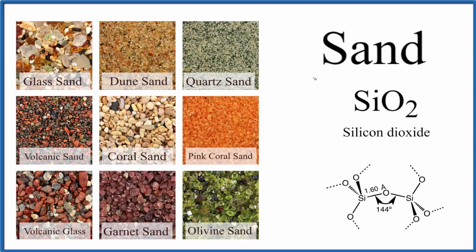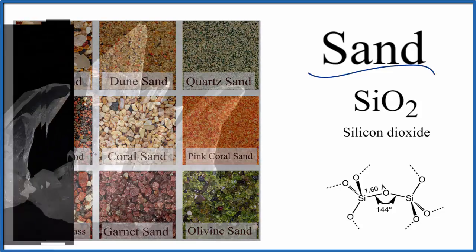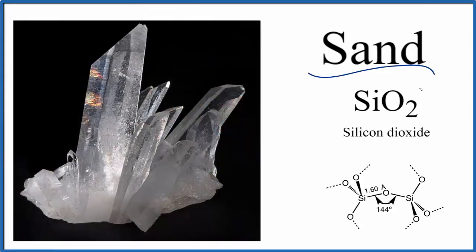If you're asked to write the chemical formula for sand, you need to realize there are many different types of sand: glass sand, quartz sand, pink coral sand. It really depends where the sand is coming from, the components, what it's made of. But for all of these different sands, and for things like quartz, the predominant component is SiO2.